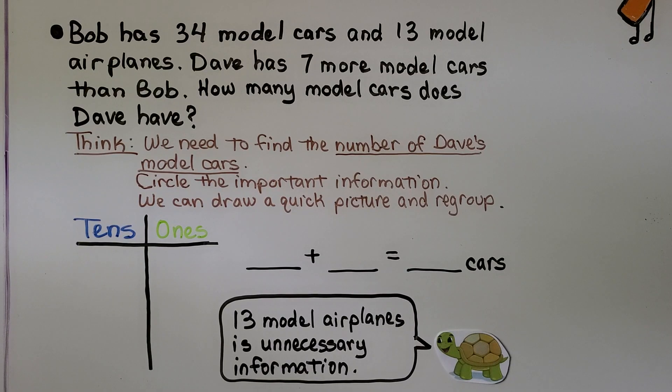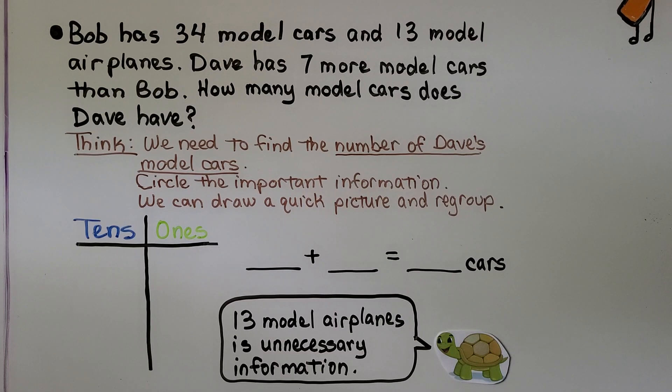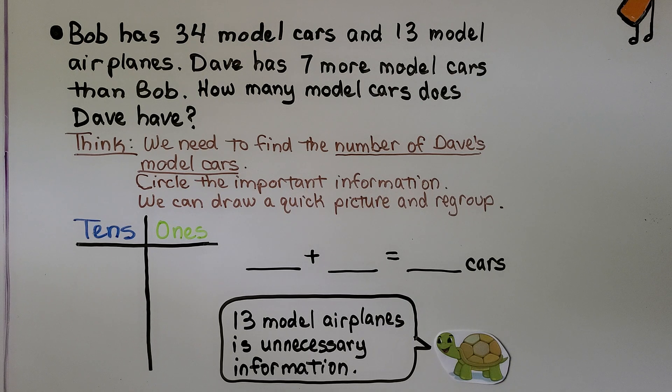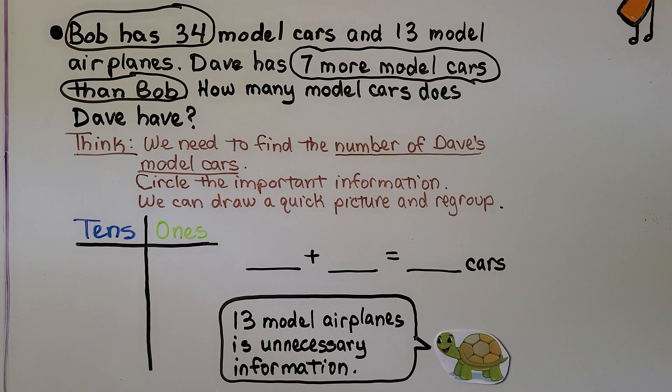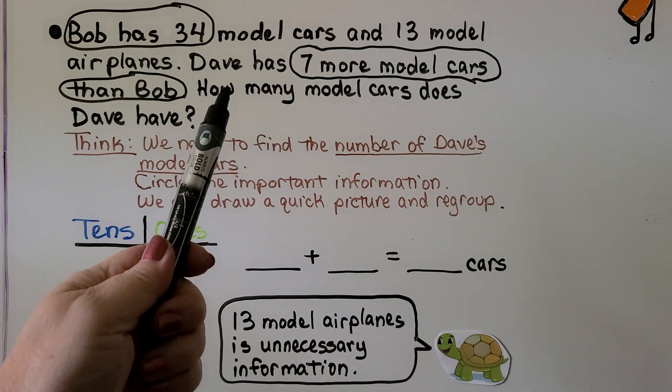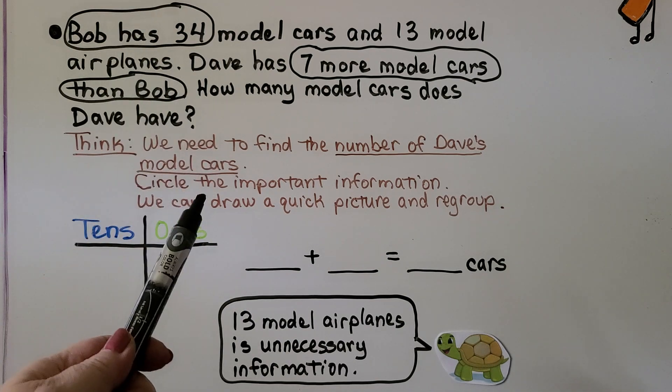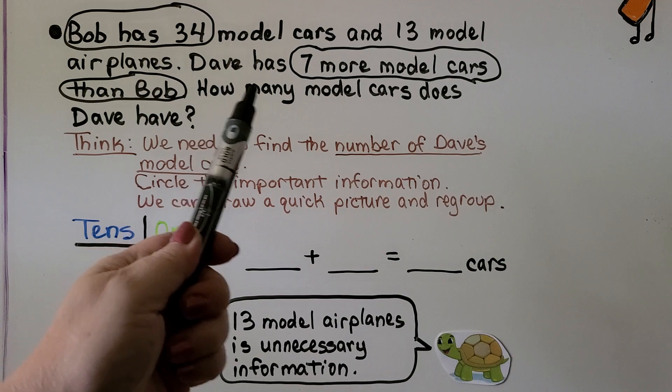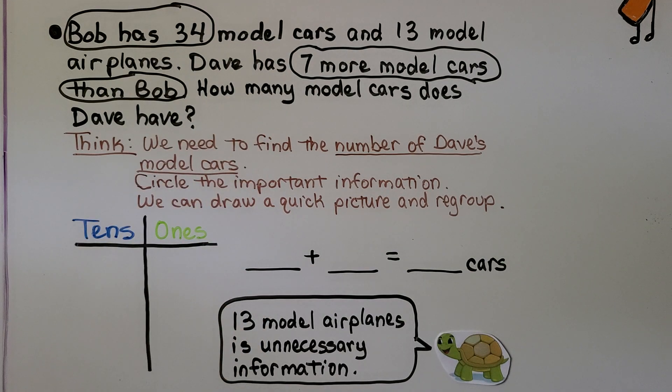Bob has 34 model cars and 13 model airplanes. Dave has seven more model cars than Bob. So how many model cars does Dave have? We think we need to find the number of Dave's model cars. We can circle the important information. Bob has 34 and Dave has seven more than Bob. We can draw a quick picture and regroup. Bob has 34. Dave has seven more than that.